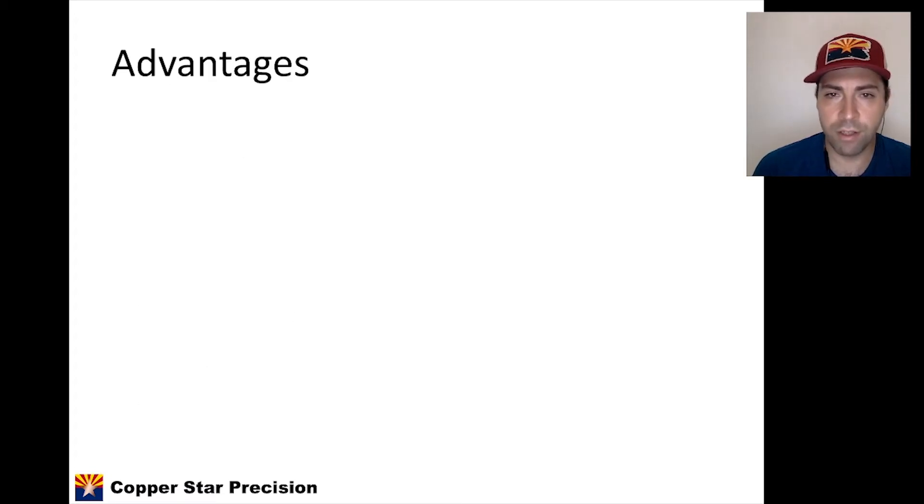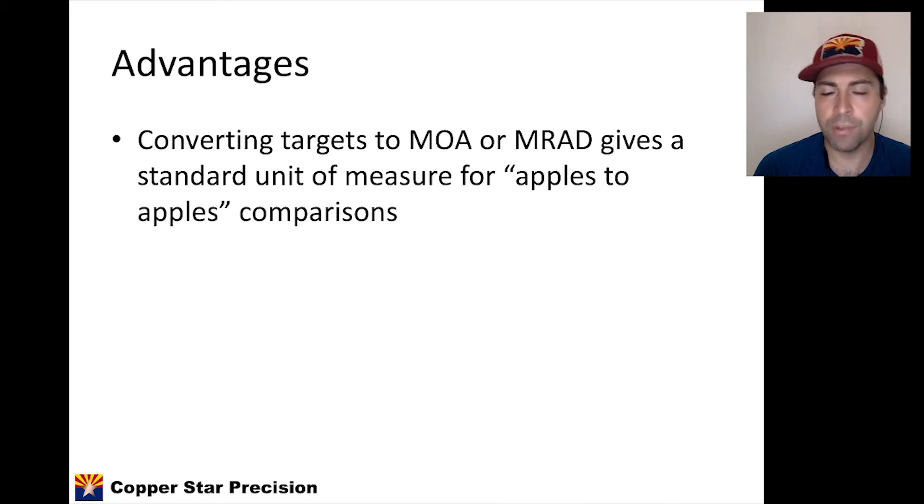We're going to talk about the advantages, how to calculate the target size in mils or MOA. I'm going to show you the equation, lay out the steps, show you a spreadsheet that you can copy and do yourself, give you some use cases of why that might be useful, and then we'll conclude at the end. Some of the advantages: Converting targets to MOA or MRAD gives a standard unit of measure for apples to apples comparison. What do I mean by this? If you have different target sizes, different distances, a two inch target here versus a three inch target there, it doesn't actually mean anything unless you take the distance into account.